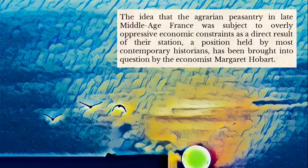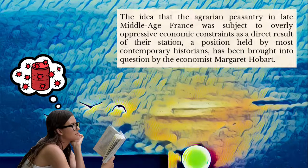Let's take a look at a sentence to see what we mean: 'The idea that the agrarian peasantry in late middle-aged France was subject to overly oppressive economic constraints as a direct result of their station, a position held by most contemporary historians, has been brought into question by the economist Margaret Hobart.' Now, there's nothing grammatically incorrect about this sentence, and it's not the most difficult sentence ever created, but it's certainly not as easy on the reader as it should be. It strains the reader's cognitive container.